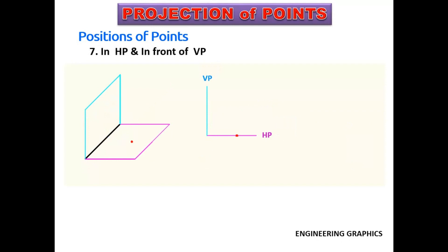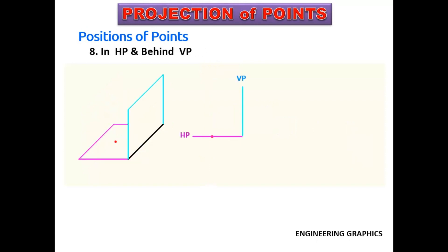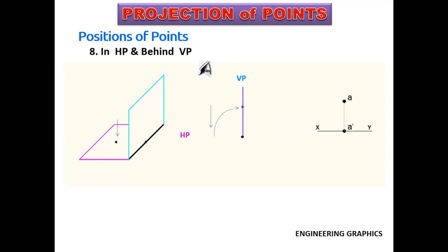In the seventh case, the point is on HP and in front of VP. Elevation will fall on the intersection of planes and plan will fall on the HP. When the horizontal plane is rotated, the plan will go below XY line and elevation remains on the XY line. In the eighth case, the point is on HP but behind VP. Elevation will fall on the intersection of planes and plan will fall on HP. When HP is rotated in the clockwise direction, the plan will go above the XY line, and elevation remains on the XY line.